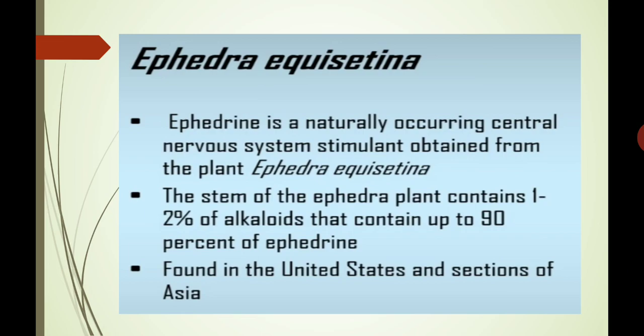Ephedrine is a naturally occurring central nervous system stimulant obtained from the plant Ephedra equisetina. The stem of the Ephedra plant contains 1 to 2 percent of alkaloids, of which up to 90 percent is ephedrine, along with other varieties found in the United States and sections of Asia.